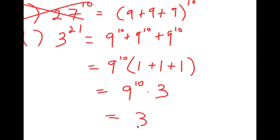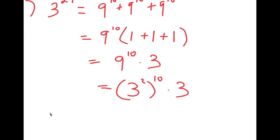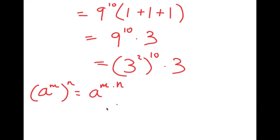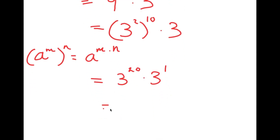Now, 9^10 equals (3 squared) to the power of 10. Using the power-of-power rule (a to the power of m to the power of n equals a to the power of m times n), 3 squared to the power of 10 equals 3 to the power of 20. Multiplying by 3 to the power of 1, I simply add the exponents to get 3 to the power of 21.